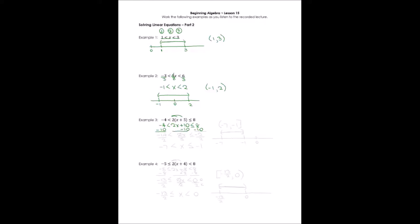Now, negative four minus negative ten, or minus ten is negative fourteen. That's less than 2x, which is less than or equal to eight minus ten, or negative two.